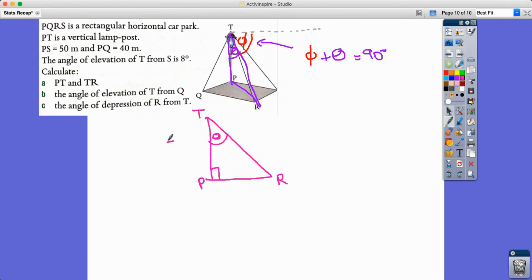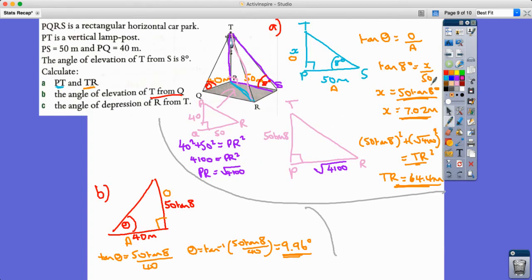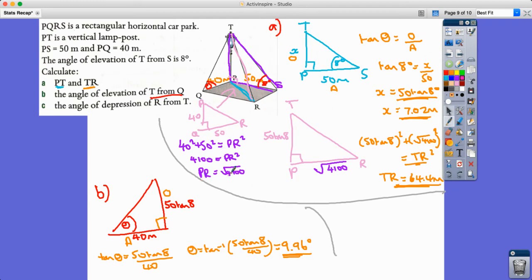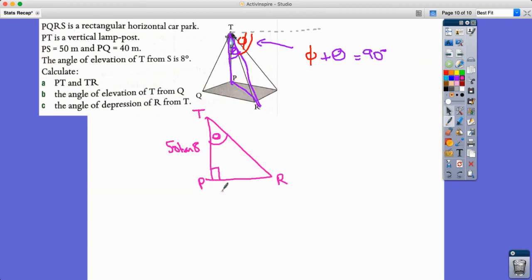I know TP is 50 tan 8, and I've also worked out TR in part A, which was 64.4, wasn't it? So I could have that in my calculator from before exact. Did I also find PR? Oh, PR was easier, isn't it? PR is the square root of 4100. I'll take that instead. I've actually got three sides available—I know three sides. I can use those to find theta.